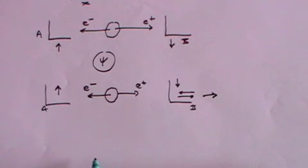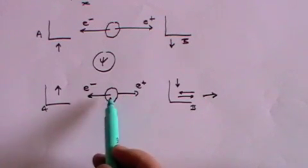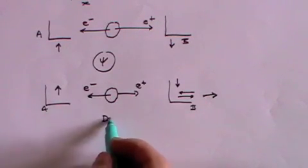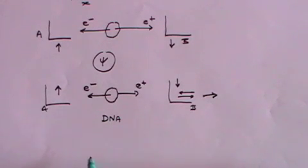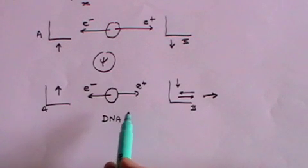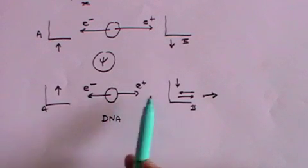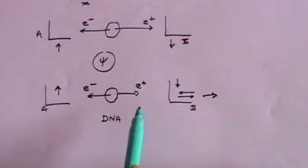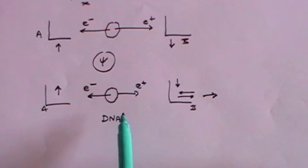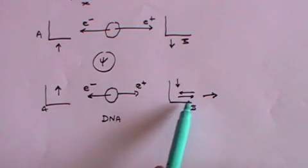The other alternative option is that somehow when these two particles are born, when they are created, they have a kind of form of, I call it, DNA. They have some information within them. It's called, the technical term is, hidden variables. They have information embedded within them that will govern their behaviour such that they always act in a way that is, as it were, complementary.